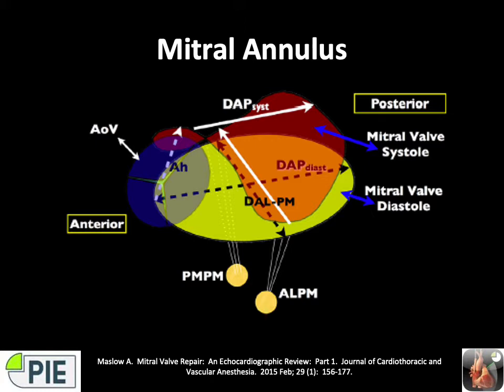Annular motion during systole consists of translation away from the apex (upward), contraction posteriorly, and folding in the anteroposterior plane. In the diagram, this is illustrated starting with the yellow circle (diastole), then displaced up, posteriorly, and folded to the red saddle shape in systole. These movements open up the LVOT and optimize flow to assist in coaptation. Annular dilatation is defined by an AP diameter of greater than 35 millimeters.